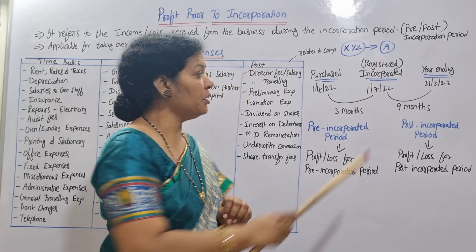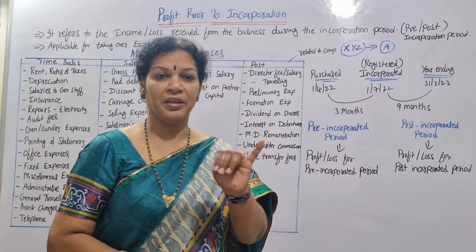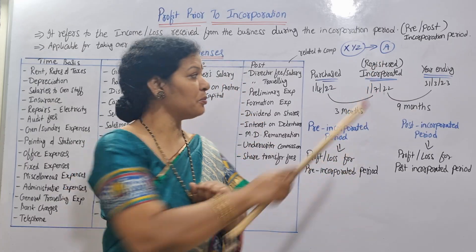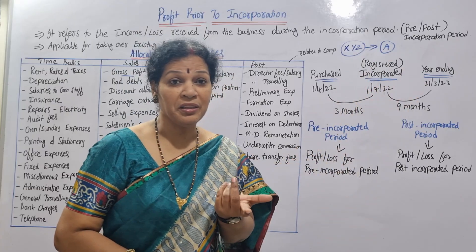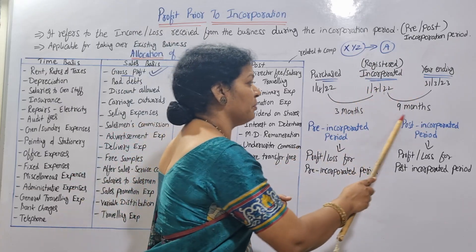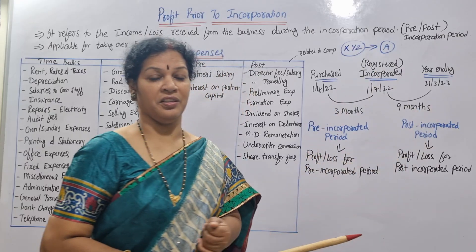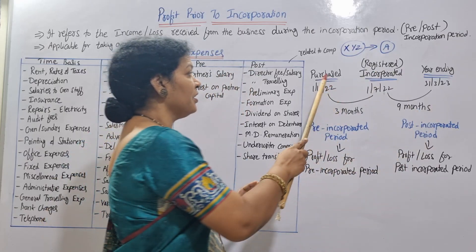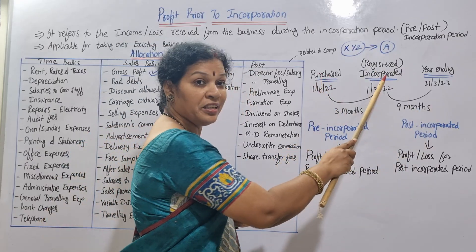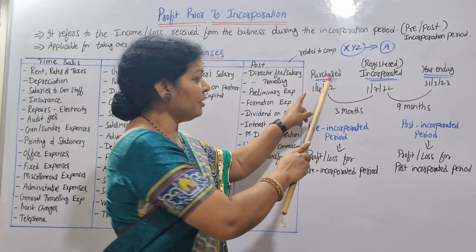From July onwards — July, August, September, October, November, December — that is nine months up to March. This nine-month period is the post-incorporated period. So we have the pre-incorporated period of three months and the post-incorporated period of nine months.